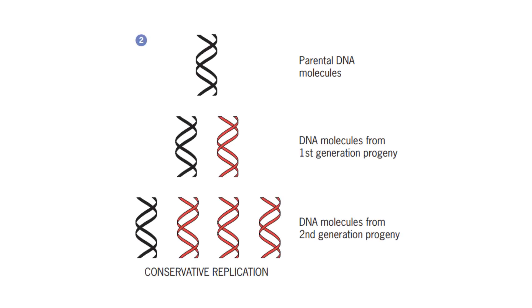In conservative replication, the parental DNA molecule directs the synthesis of an entirely new double-stranded DNA molecule. After one round of replication, one molecule is conserved as two old strands while the other DNA molecule consists of entirely new material. In the second round of replication, we obtain four DNA molecules — one is entirely conserved while the three others consist of all new genetic material.